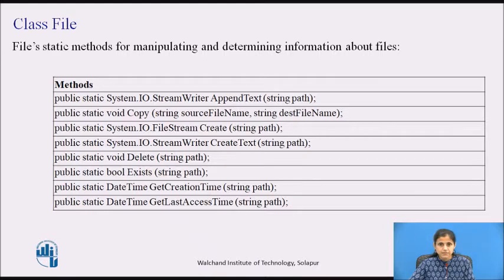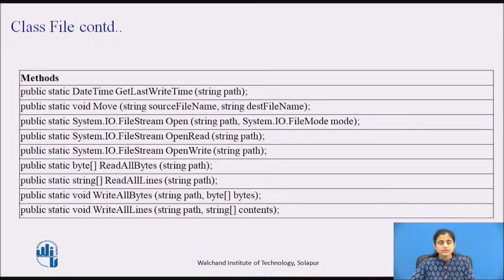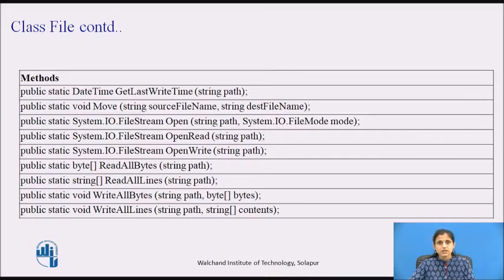The GetLastAccessTime method accepts path as a parameter and returns the date and time when the specified file or directory was last accessed. The GetLastWriteTime method returns the date and time when the specified file or directory was last written to. The Move method accepts two parameters: source file name and destination file name, and moves a specified file to a new location.